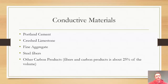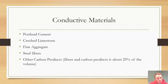Some of the materials in conductive concrete are Portland cement, crushed limestone, fine aggregate, steel fibers, and other carbon products. These steel fibers and carbon products make up about 25% of the volume of the concrete.